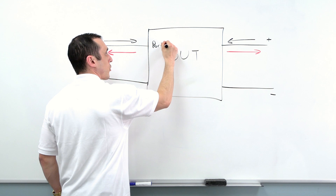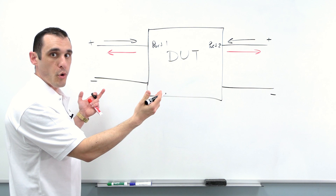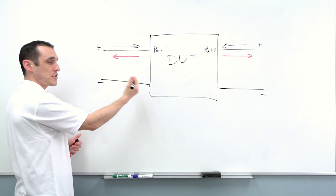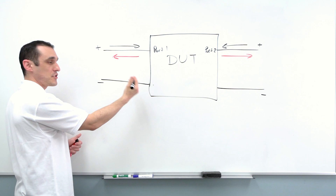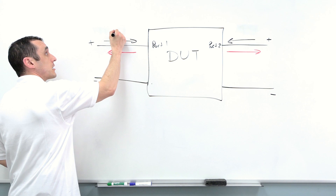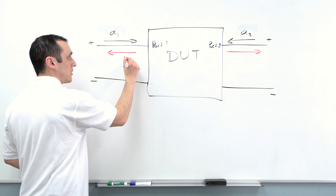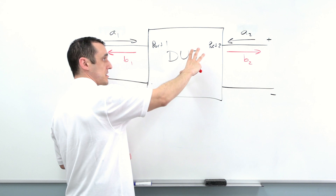Because we have port one and port two, we call this a two-port network. This confused me when I was first learning because I thought the reference line was also a port — it's not, it's just schematically meant to represent your reference. When talking about the signals we put in and get out: A1 is the signal we put into port one, A2 is the signal we put into port two. We can possibly reflect signal B1 at port one, and possibly reflect signal B2 at port two.